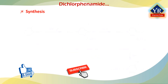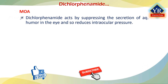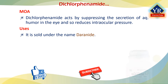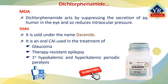Dichlorphenamide is synthesized in a relatively simple way from 2-chlorophenol. 2-Chlorophenol undergoes sulfochlorination by chlorosulfonic acid, forming 4-hydroxy-5-chlorobenzene-1,3-disulfonyl chloride. The hydroxy group is replaced by a chlorine atom using phosphorus pentachloride, giving 4,5-dichlorobenzene-1,3-disulfonyl chloride, and its reaction with liquid ammonia gives the desired dichlorphenamide. Dichlorphenamide acts by partially suppressing the secretion or inflow of aqueous humor in the eye, reducing intraocular pressure. Sold under the name Daranide, it is an oral carbonic anhydrase inhibitor used in the treatment of glaucoma. It was also found effective in cases of therapy-resistant epilepsy. As an orphan drug, it is used for the treatment of primary hypokalemic and hyperkalemic periodic paralysis.